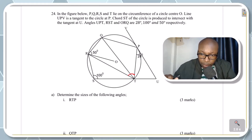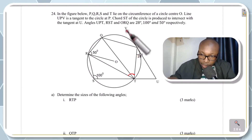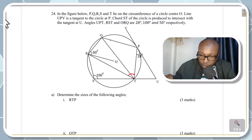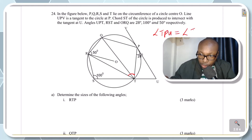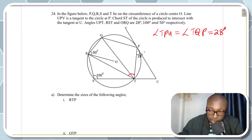I will be giving the reasons for the answers I get for all these angles. When I look at this tangent VPU and the angle of 28 degrees, there is another angle I can get. Angle TPU is equal to angle TQP — both are 28 degrees. The reason is that these are angles in the alternate segment. Angle TPU, which is 28 degrees, is equal to angle TQP, so that angle is 28 degrees as well.